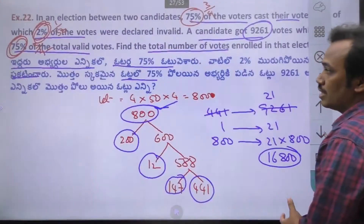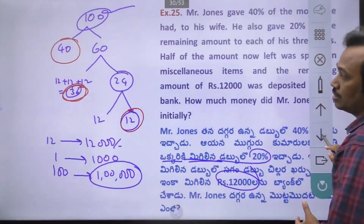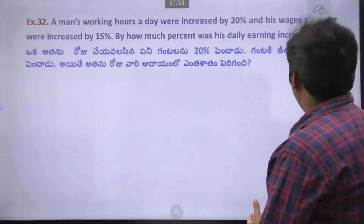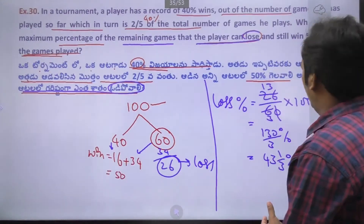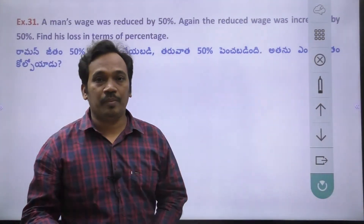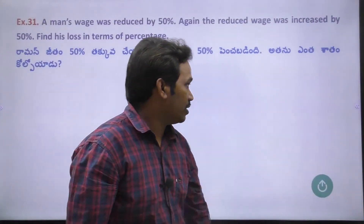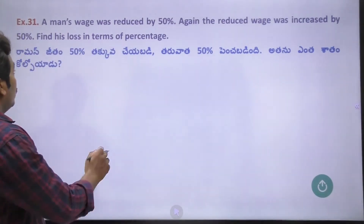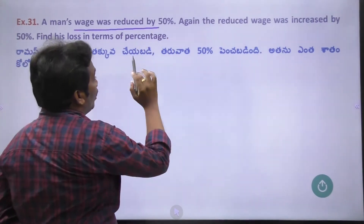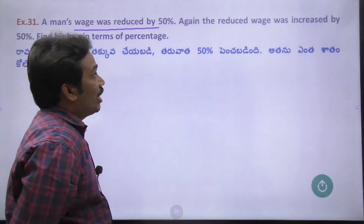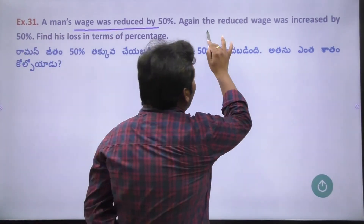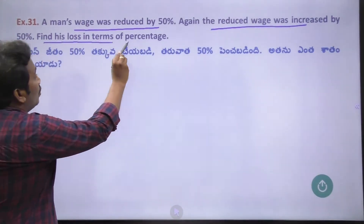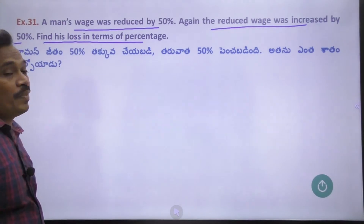We will complete the remaining 31st problem. Problem number 31: A man's wage was reduced by 50%. Again, the reduced wage was increased by 50%. Find the loss in terms of percentage.